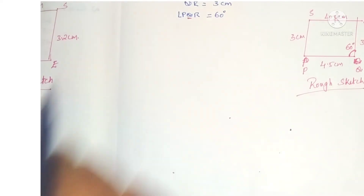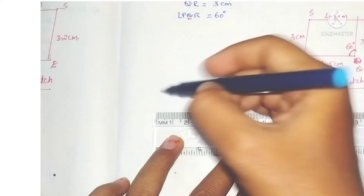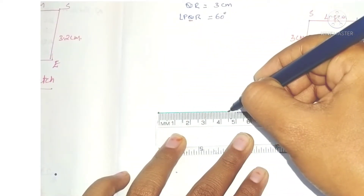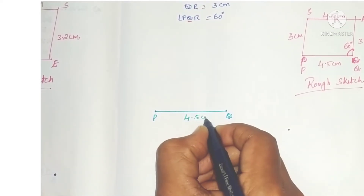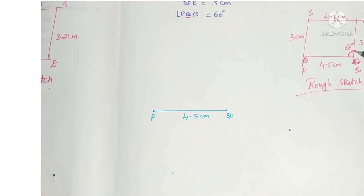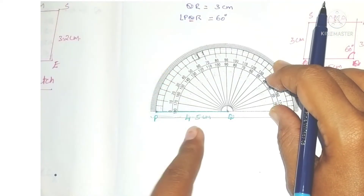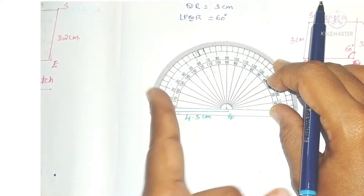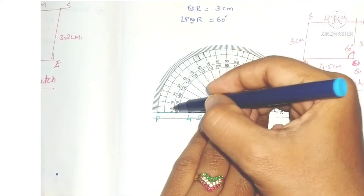Start the construction. PQ is 4.5 centimeters, so take the scale and draw a line segment PQ of 4.5 centimeters, placing the point at 0 and marking 4.5. This gives us PQ = 4.5 centimeters.